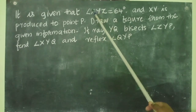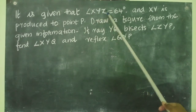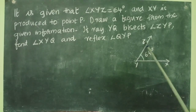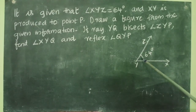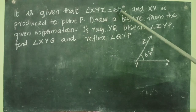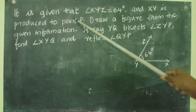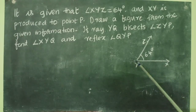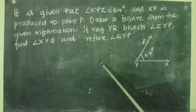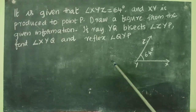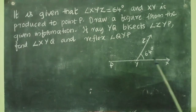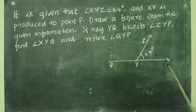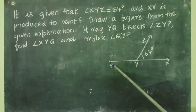So first let us draw angle XYZ. Here I have drawn angle XYZ — it is 64 degrees. That is the first construction. Then XY is produced to point P. We have to extend XY a little more to the point P. So here is our figure: first we have drawn angle XYZ, then this XY we produced to point P.